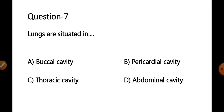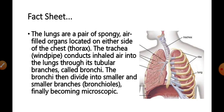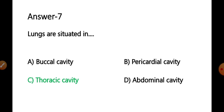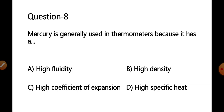Question 7: Lungs are situated in — options: A) buccal cavity, B) pericardial cavity, C) thoracic cavity, D) abdominal cavity. The lungs are a pair of spongy, air-filled organs located on either side of the chest or thorax. The trachea conducts inhaled air into the lungs through tubular branches called bronchi, which divide into smaller bronchioles. Therefore, the correct answer is option C — thoracic cavity.